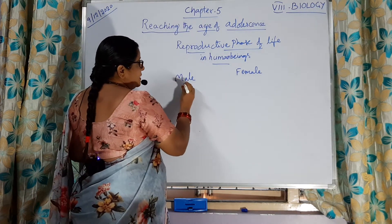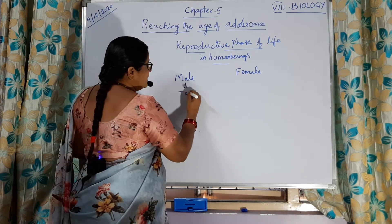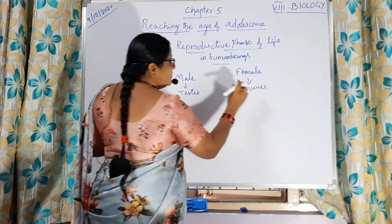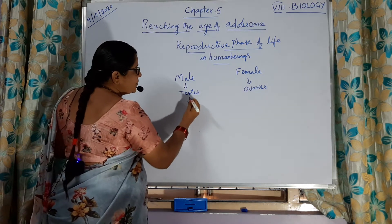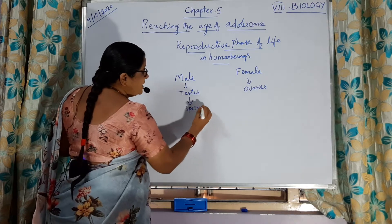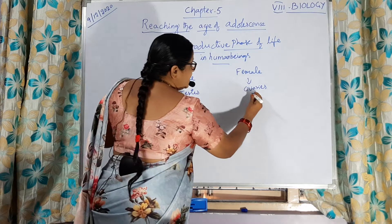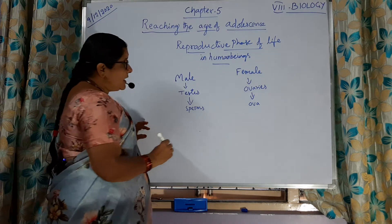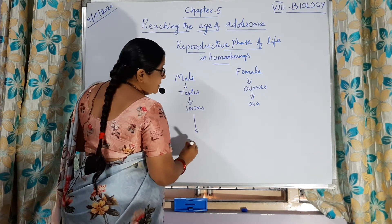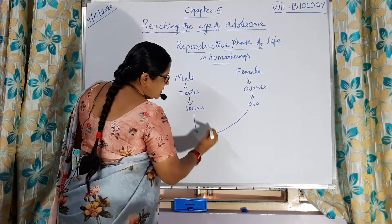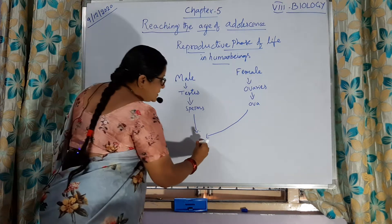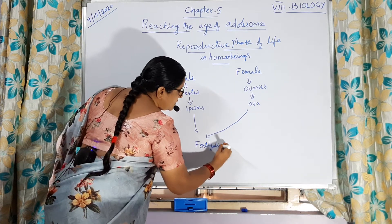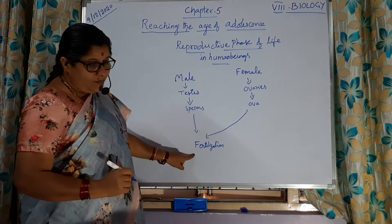Males have the reproductive organ — the testes. Females have ovaries. The testes are going to produce sperms, which are the male gametes. Females are going to produce ova, which are the female gametes. The sperm is going to fuse with the ovum, and that process is called fertilization.